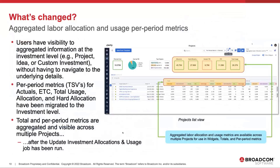With respect to the aggregated labor calculation and usage metrics, these are now available at the higher level — they've been uplifted from their parent into the investment. Across projects, ideas, or custom investment listings, you have immediate access to that information without having to drill into the details. The appropriate metrics for actuals, ETC, total usage, allocation, and hard allocation are available, given that they've now been moved to the investment object. The key word is that this happens after the Update Investment Allocation and Usage job is run.